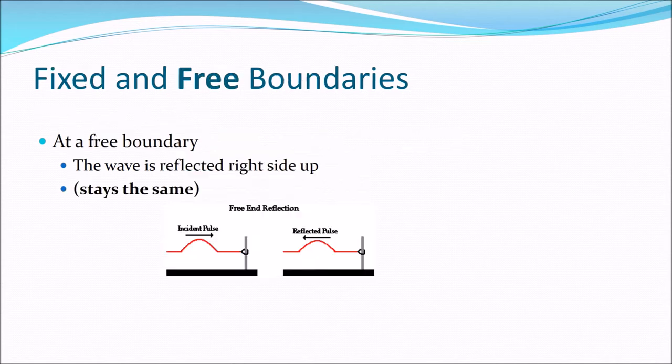A free boundary is when we haven't tied the rope securely to the pole — the rope can still move up and down on the pole. It's attached but can move, and in that case the wave will stay the same; it won't be flipped over.